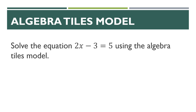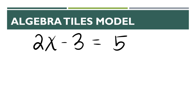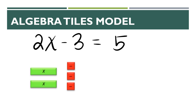Let's use the algebra tiles model to solve the equation two X minus three equals five. The algebra tiles model is great for when you are subtracting a number — the previous two equations we solved involved a variable plus a number, so this model is a great way to solve equations where a subtraction sign is involved. We have two green X's representing two X, three red squares representing negative three, and that equals five yellow squares representing positive five. The goal is to isolate one green rectangle — one X tile.